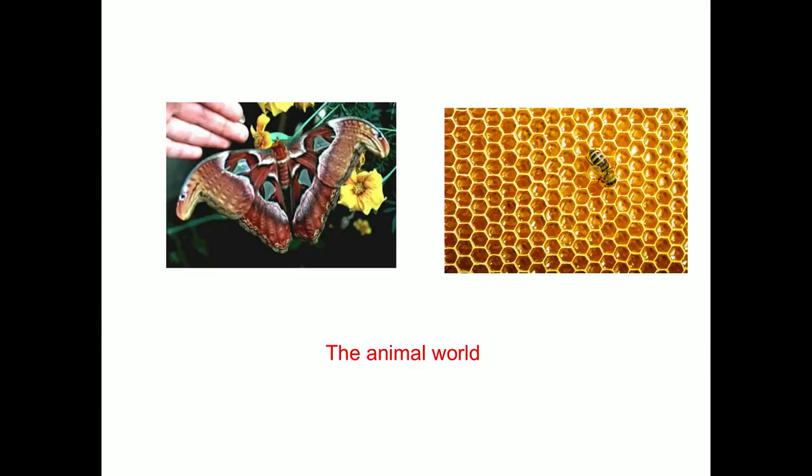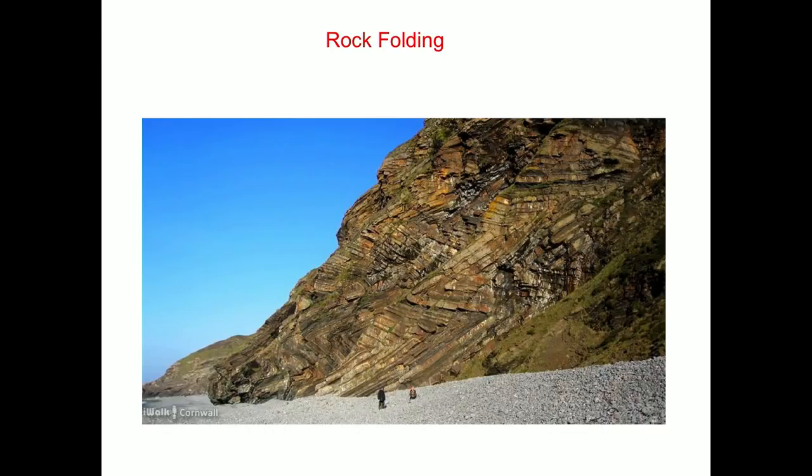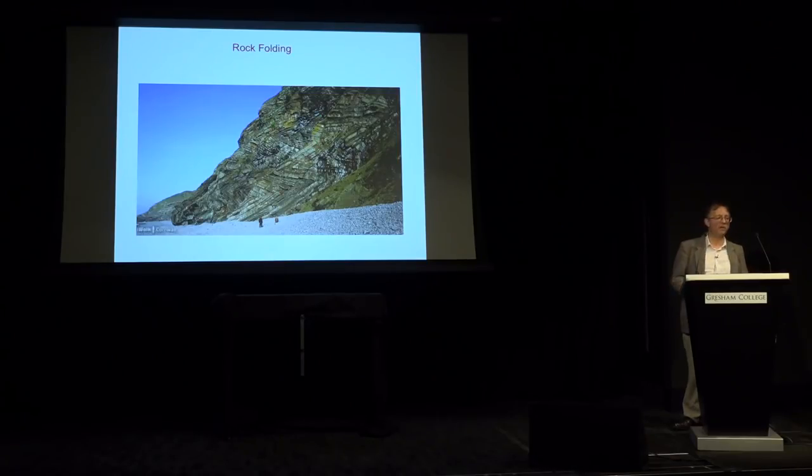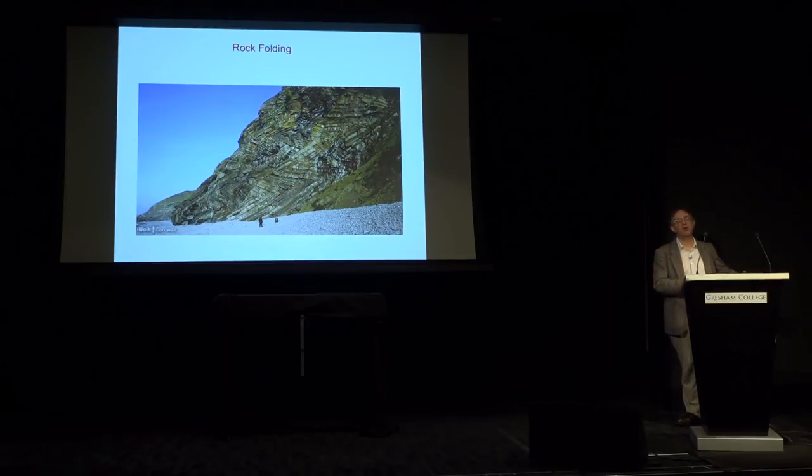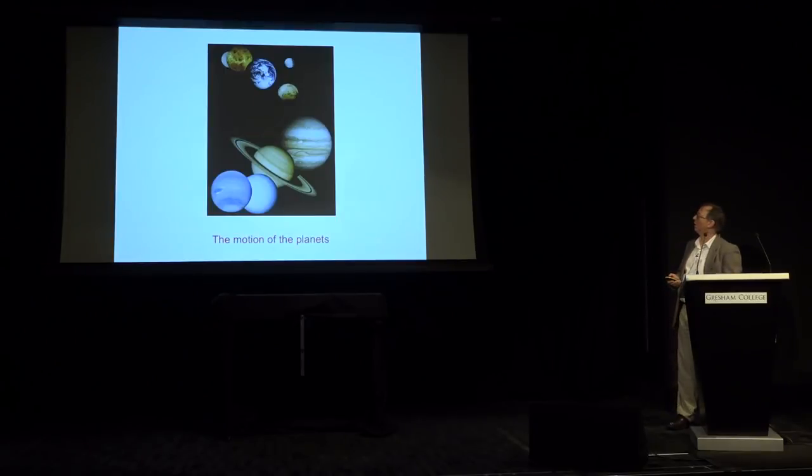We also see regularity in the animal world. Here we have a honeycomb made up of beautiful hexagons. The reason we have hexagons is that they fill a lot of space and they are very strong. Here we have a butterfly, which has beautiful patterns with dihedral symmetry. Another area I work in a great deal is the mathematical theory of rock formation. Here are rocks in Cornwall, a place called Millook. What I like about this is the extreme regularity of these chevron patterns. It's possible mathematically to accurately predict those shapes without actually going anywhere near a rock.